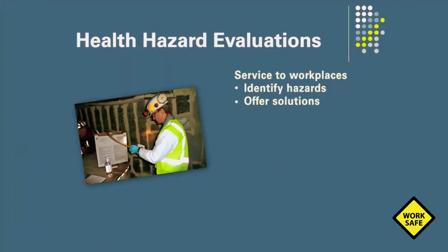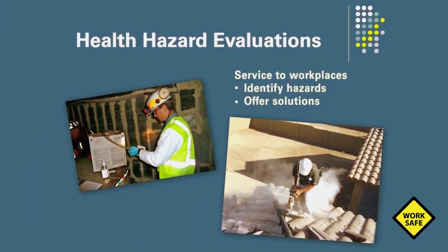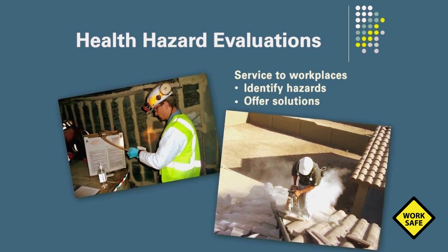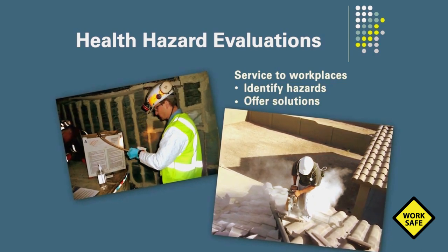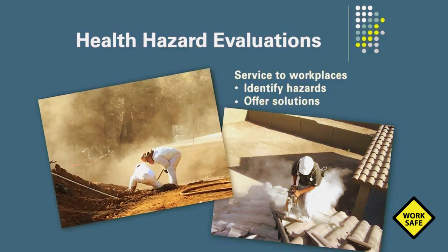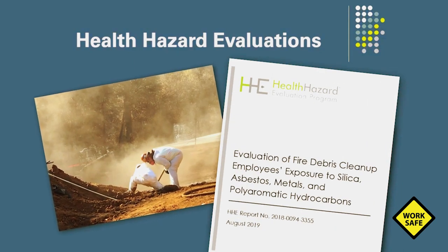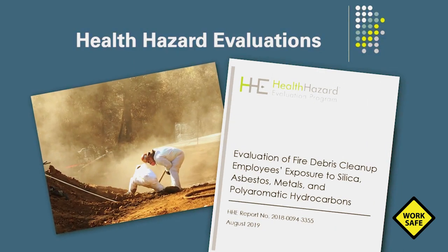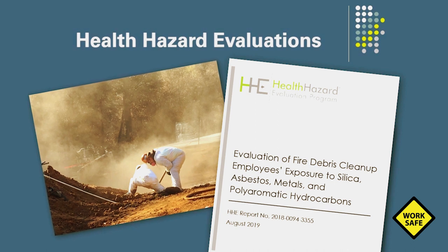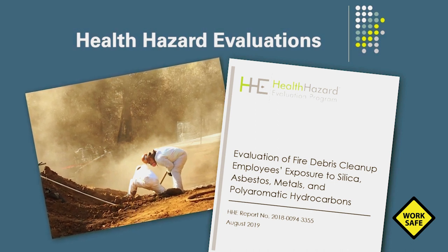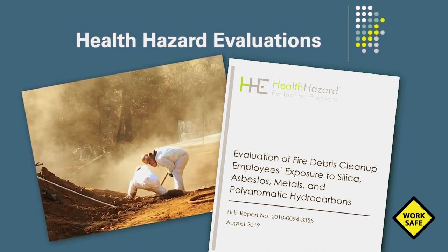The first evaluation was done March 10, 1970, at the Sager Glove Corporation in Murray, Kentucky, where researchers studied asbestos exposures. Health hazard evaluations continue to this day, helping employees, unions, and employers identify and control hazards in the workplace.